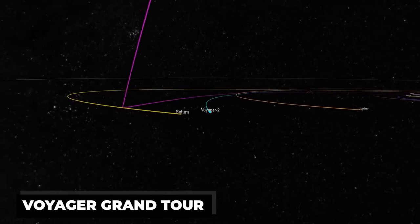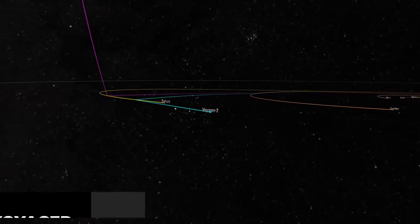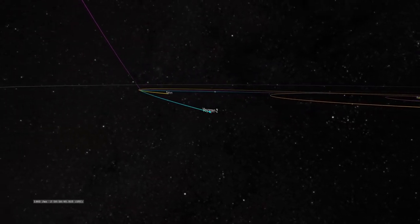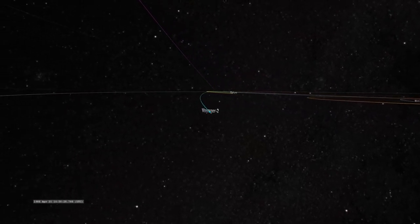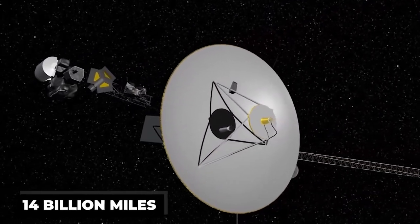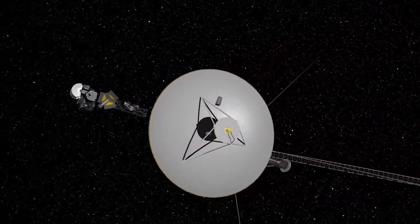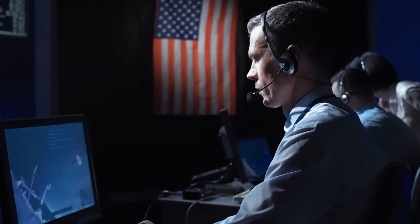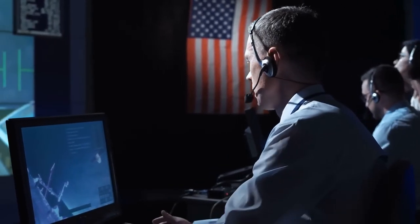The Voyager Grand Tour, as it was named, was the name given to the flybys of the four planets. These missions have been a marvel of engineering and exploration. The probes have traveled over 14 billion miles and continue to send back groundbreaking scientific data, giving us a deeper understanding of our place in the universe.